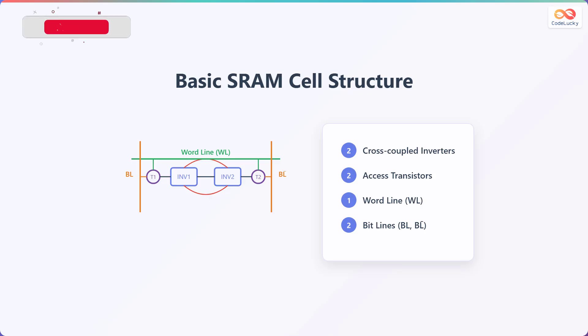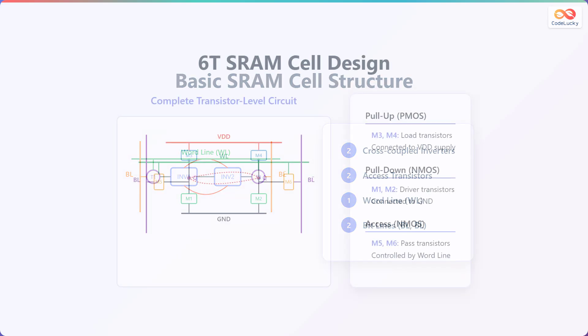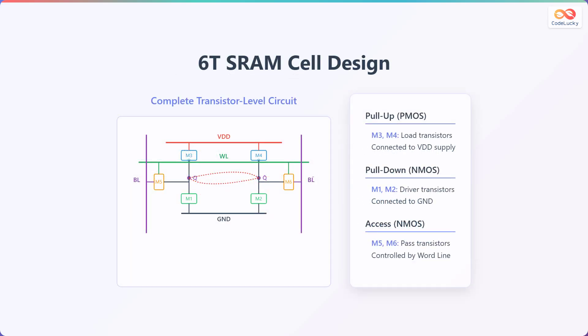In summary, there are two cross-coupled inverters, two access transistors, one word line, and two bit lines, which are used for reading and writing data. Let's take a closer look at the six-transistor SRAM cell design, which is a common implementation.